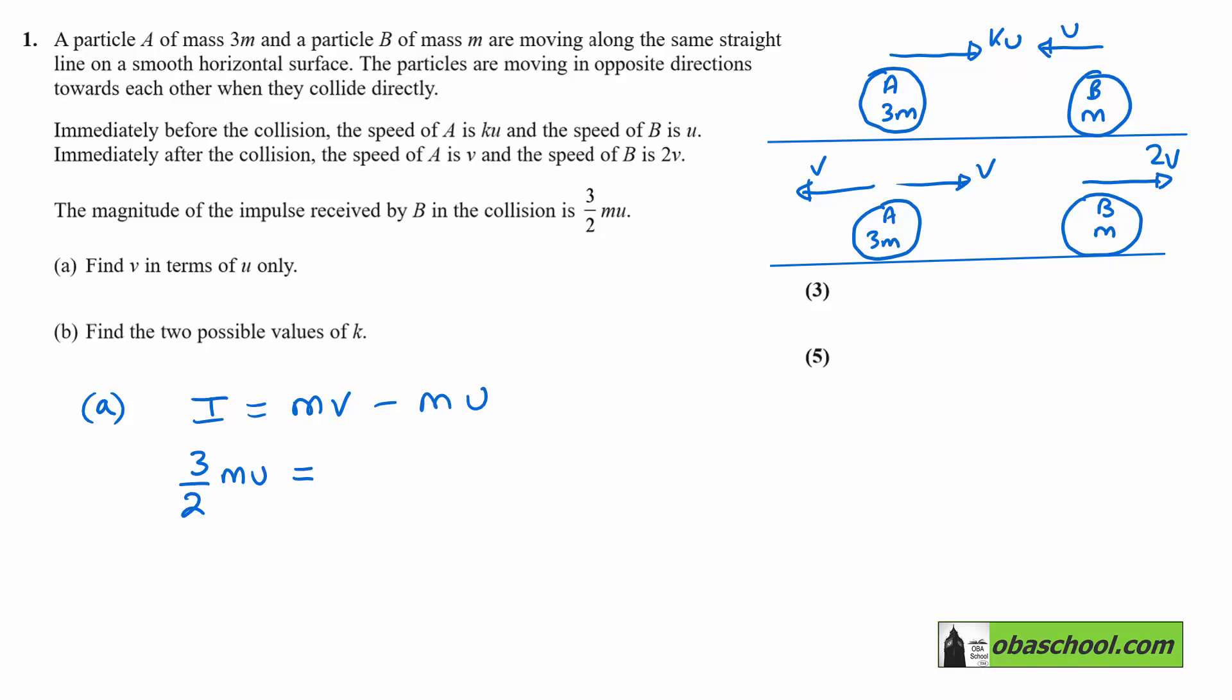That's going to be 2mV minus m(-U). Taking the direction to the right as positive, 2mV is the momentum after and m(-U) is the momentum before. So we have 3/2 mu equals 2mV plus mU.